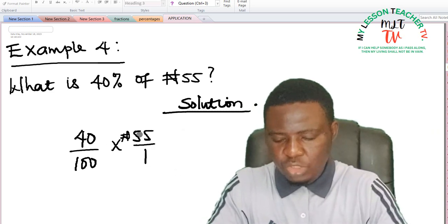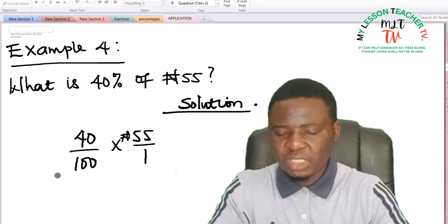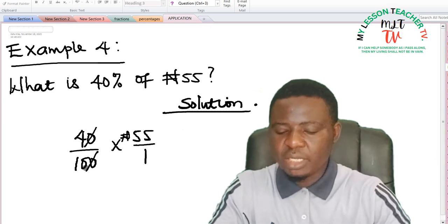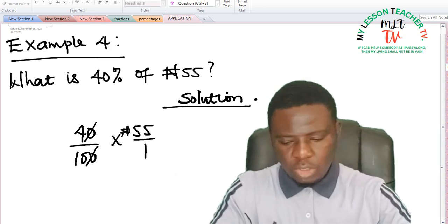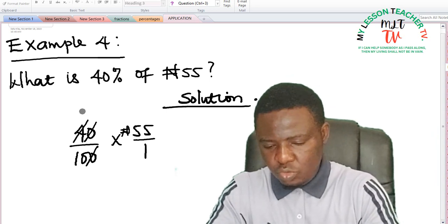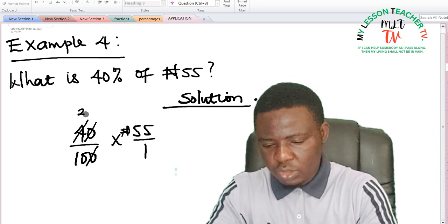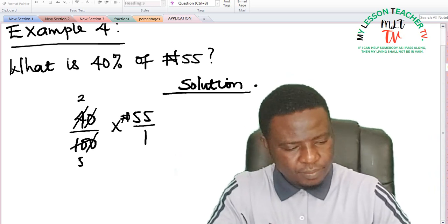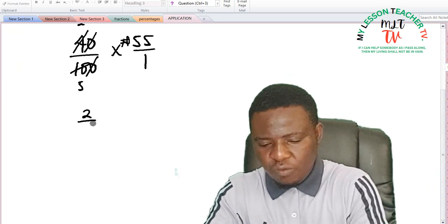So all you need to do is to reduce the percentages to fractions in its lowest term. So if you divide both sides by 10, this is what you will get. 2 can also divide, 2 into 4 is 2, 2 into 10 is 5. So we have 2 over 5.